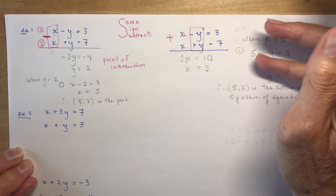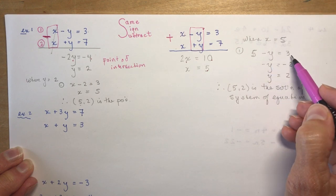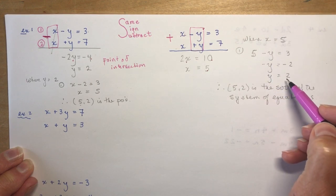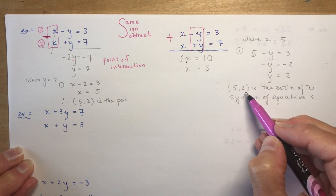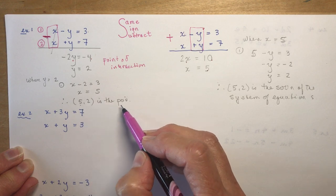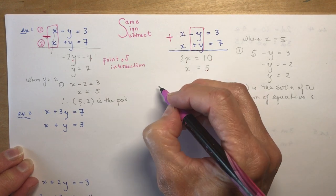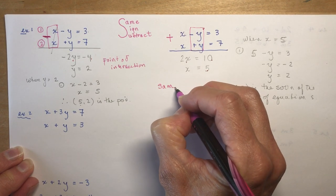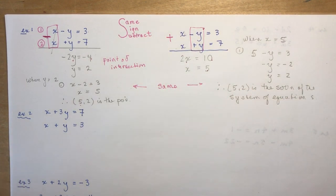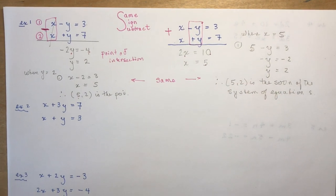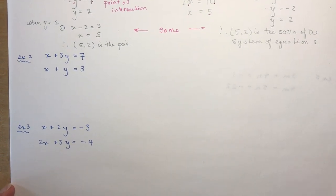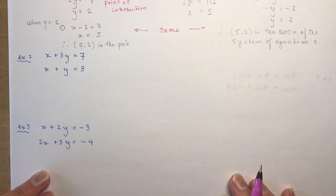When x = 5: 5 − y = 3, so −y = −2 and y = 2. The solution of the system is (5, 2). It didn't matter whether we added or subtracted — we get the same answer — and that's the decision you'll be making throughout the exercises.